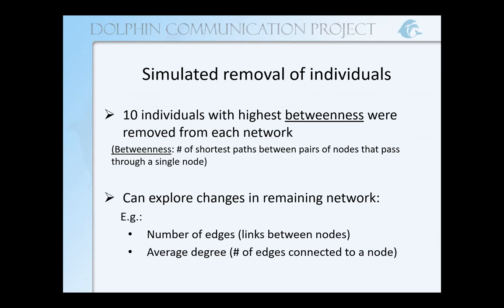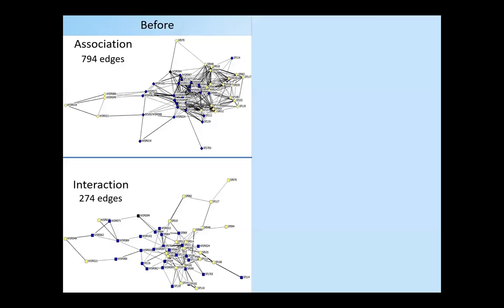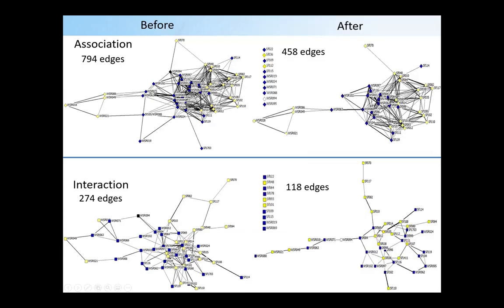As a reminder, this is what our networks looked like before removals: the association network had 794 edges, the interaction network had 274 edges, and we have these peripheral individuals that are kind of indirectly connected in both networks. After removing our ten individuals with the highest betweenness, we see that our interaction network especially becomes much more disjointed. While everyone is still connected to each other, it's going to take a lot more to get information from dolphin number 70 over here to number 69 than it did before.